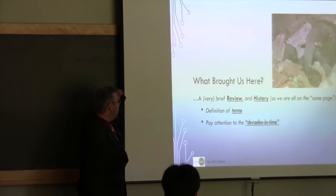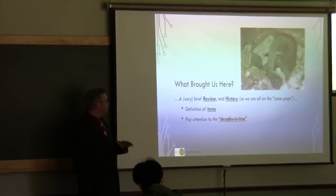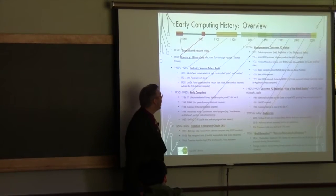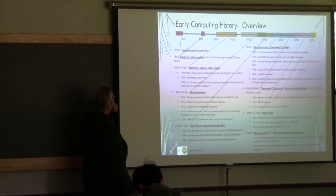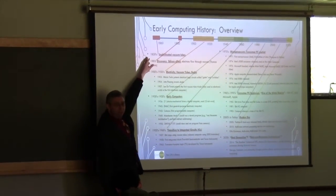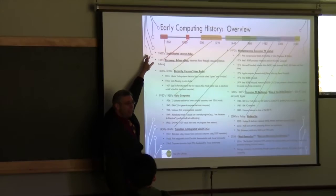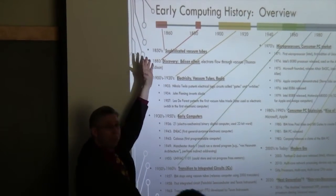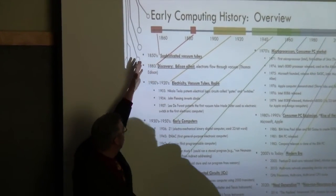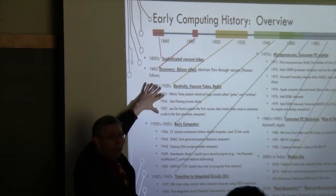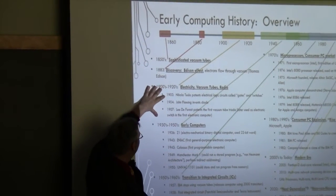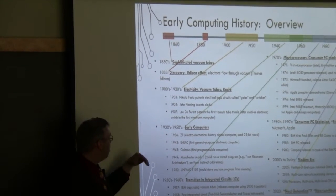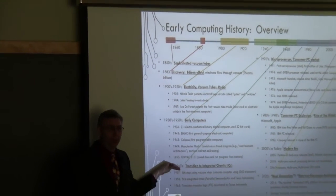So, a very brief history: we're going back to the 30s. We had sophisticated vacuum tubes back in the 1800s, 1850s — the Edison effect, electrons flowing through vacuum. We started playing with vacuum tubes; radios and TVs started showing up. Then we started doing this 'computer thing.' A lot happened in the 30s — Turing did his work in the 30s.